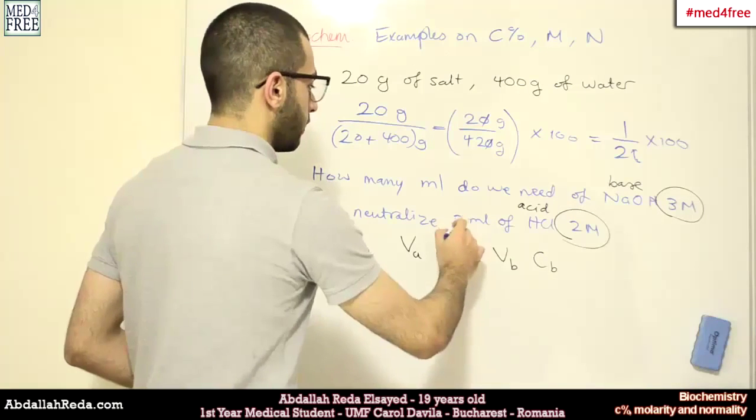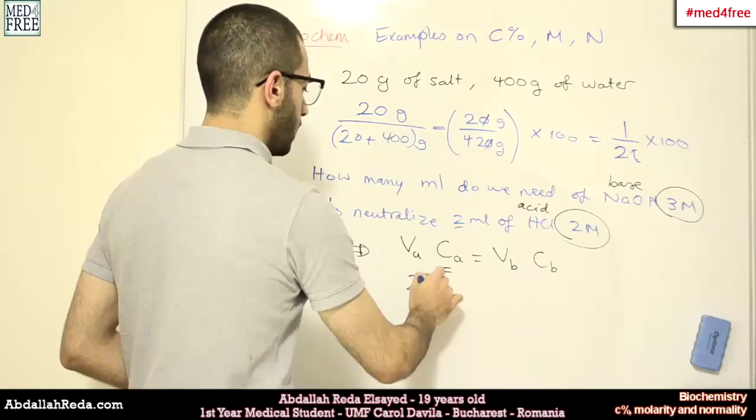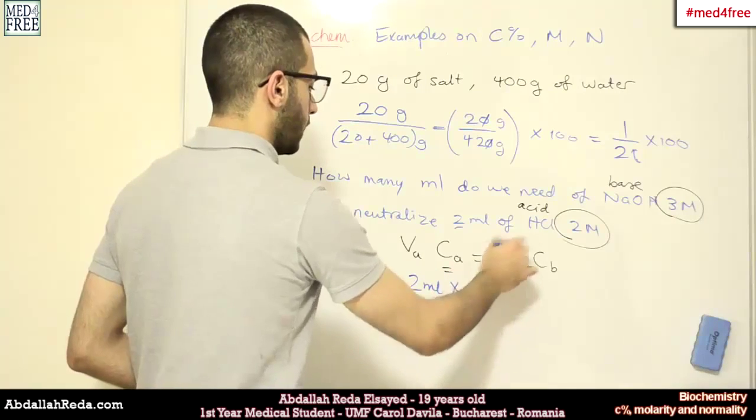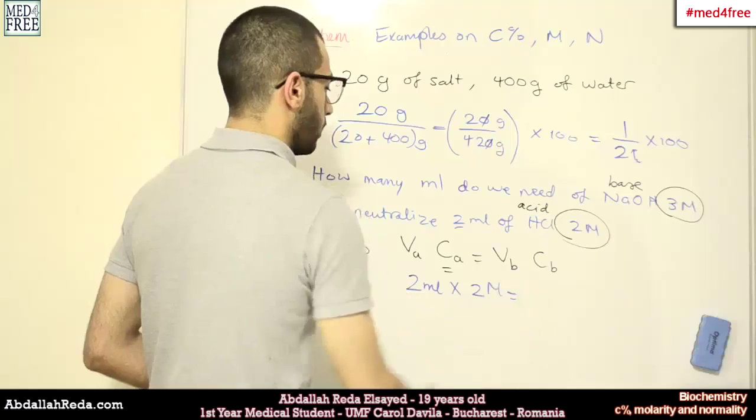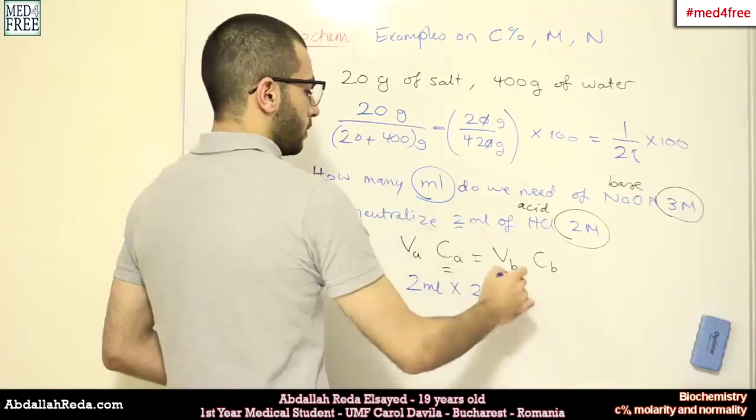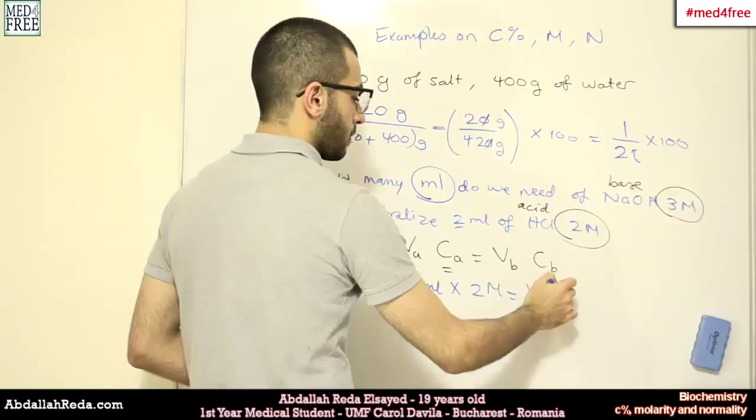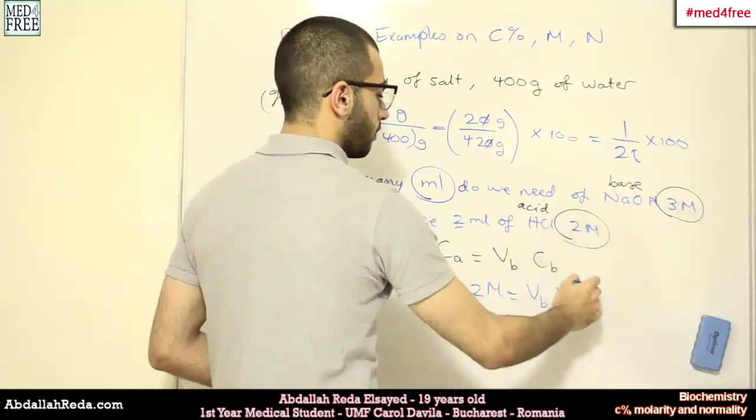Then we plug in the values. We have 2 milliliters multiplied by 2 molar equals the volume of the base, which is unknown, multiplied by 3 molar.